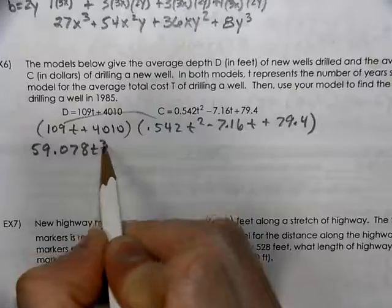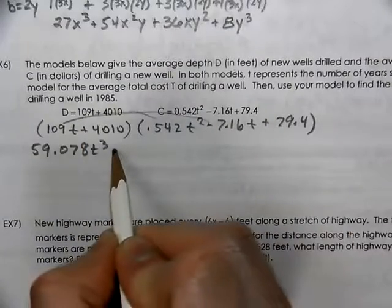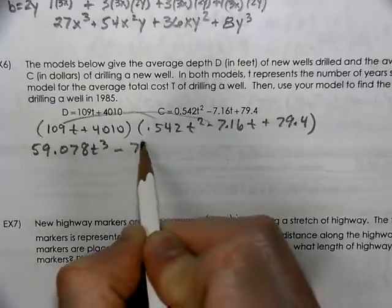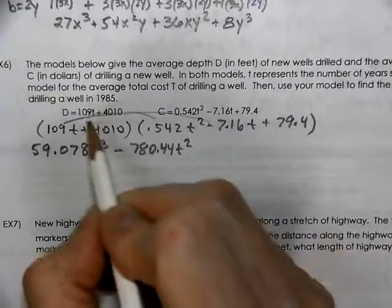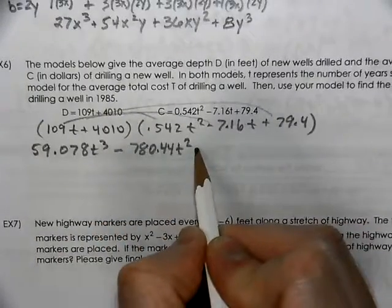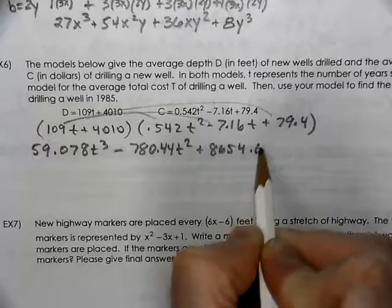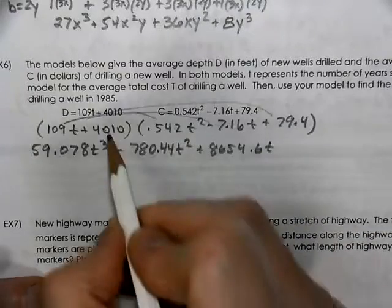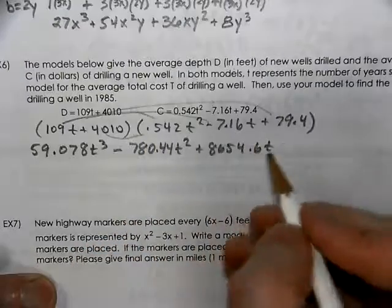That's t cubed. 1 and 2 make the 3. Multiply here to get a negative 780.44t squared. Multiply the end here to get 8654.6t. Then we multiply the inside.